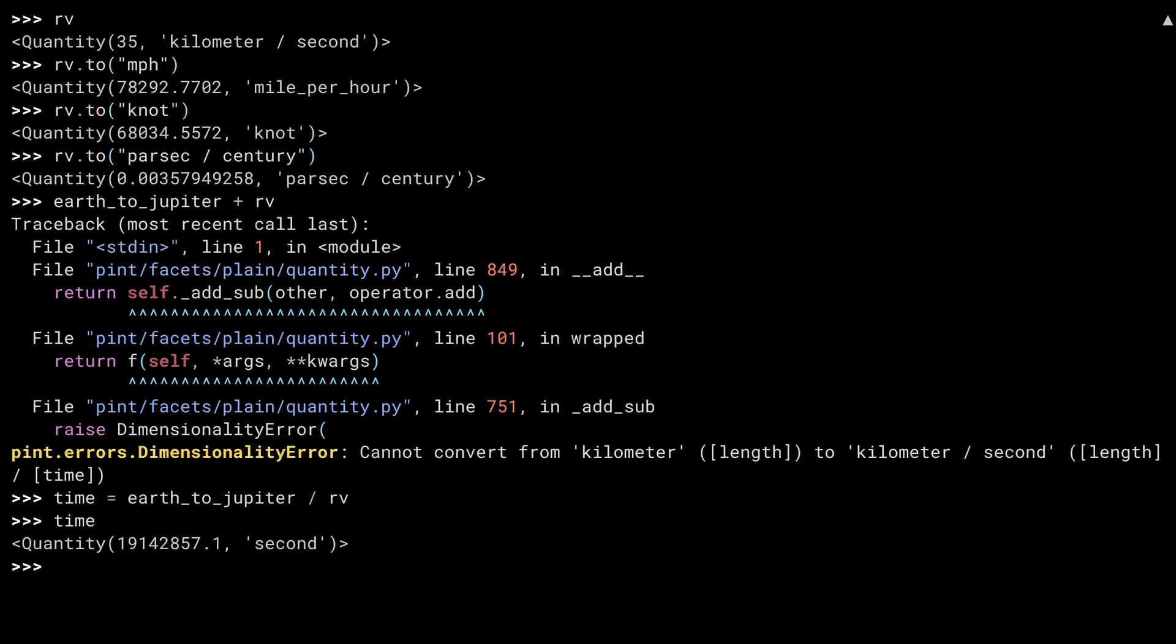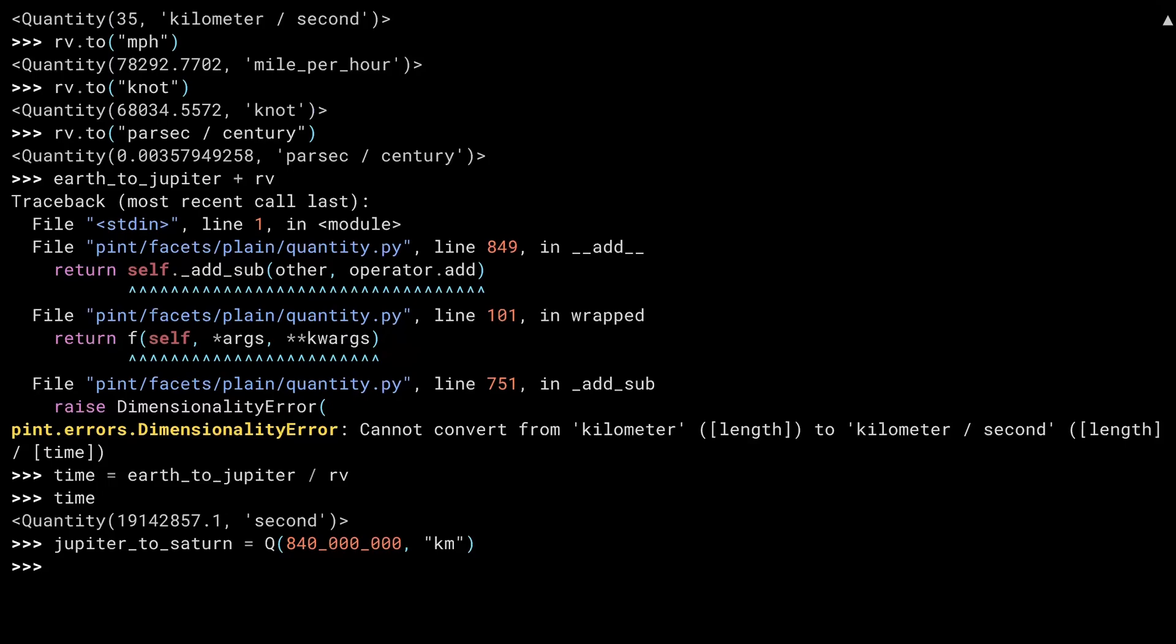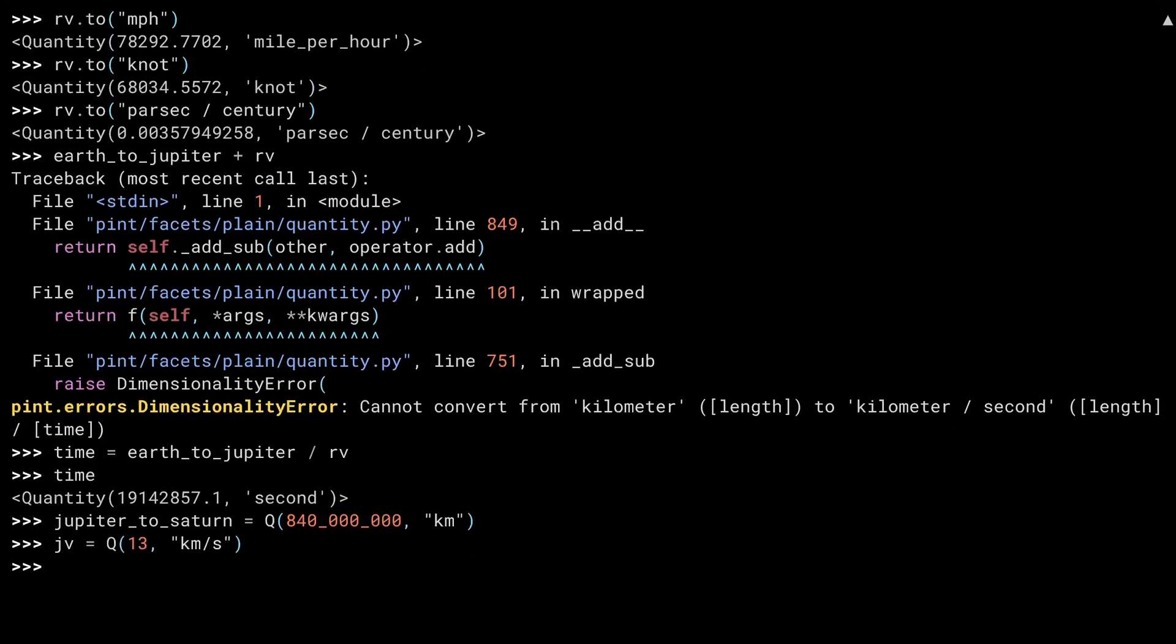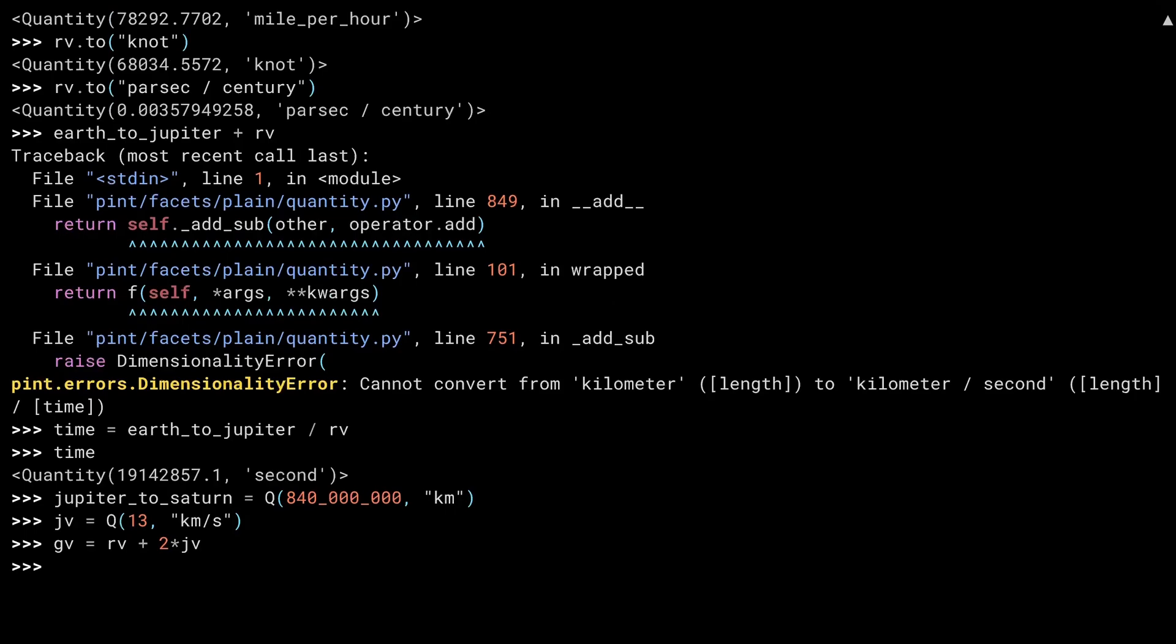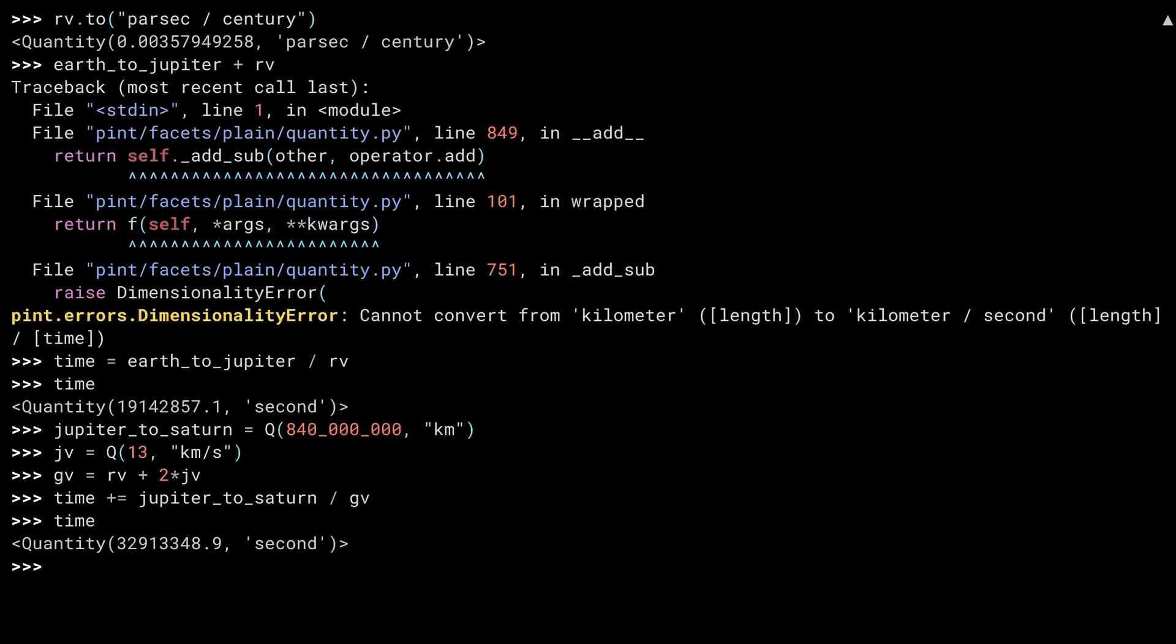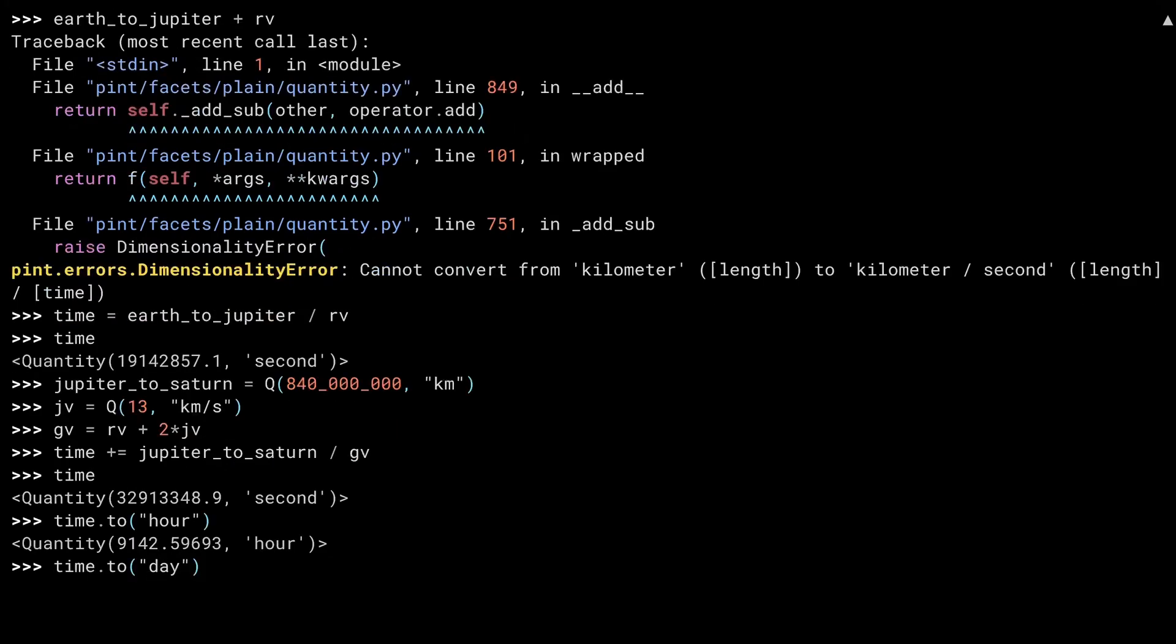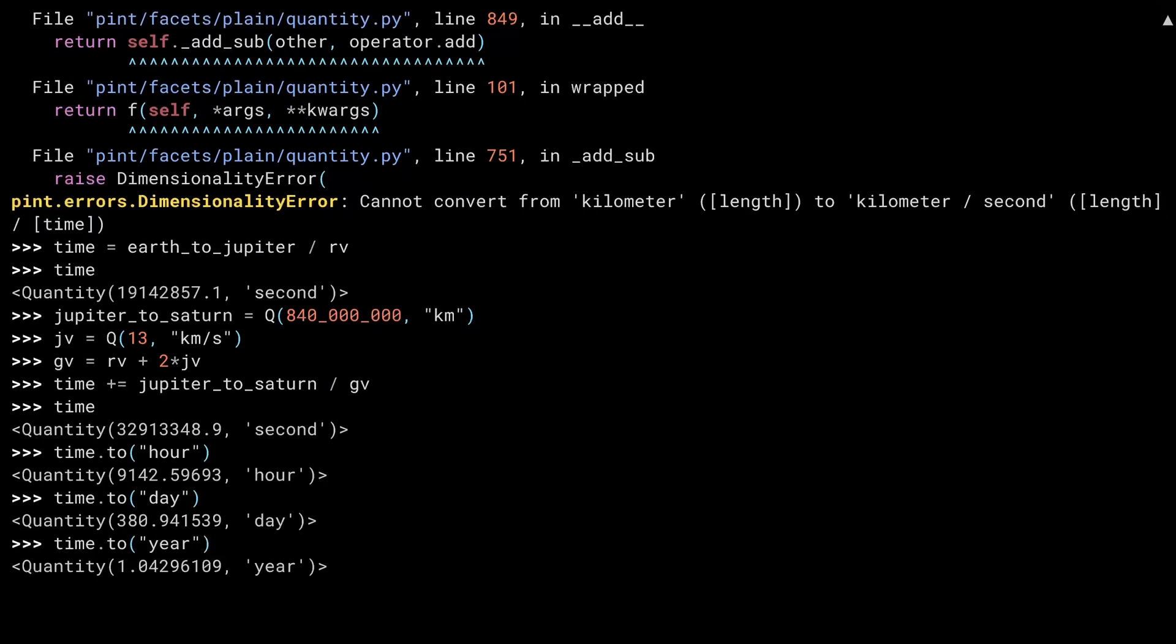Okay, that puts our rocket at Jupiter. If you want to use Jupiter as a gravity assist, you'll need some more info. The distance from Jupiter to Saturn—again, just a sample number. The velocity of Jupiter itself. And now it's time to apply the 2U gravity assist formula that I showed you before, taking the original rocket velocity and adding two times Jupiter's. I've stored that away in GV. Now let's use the value to calculate the additional travel time to Saturn. And so you get almost 33 million seconds. Of course, that's a little hard to imagine. So, in hours, or days—that's just a little over a year.